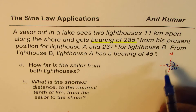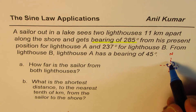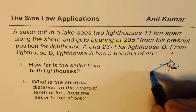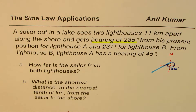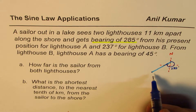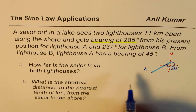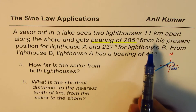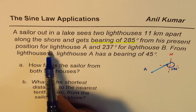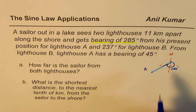Along this direction we have the position of lighthouse A. So from north, 285 degrees brings us to this position, which we'll label A. Then it says 237 degrees for lighthouse B. So lighthouse B is at 237 degrees.